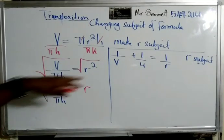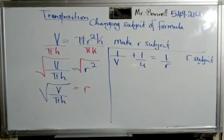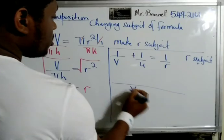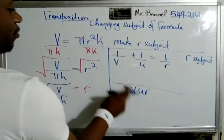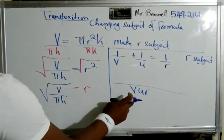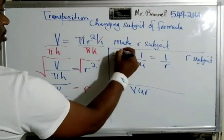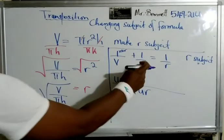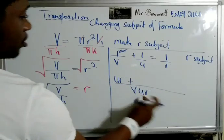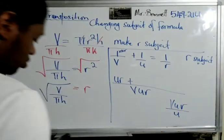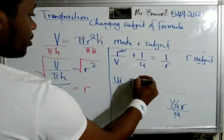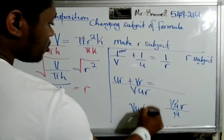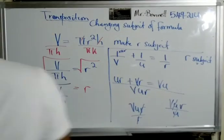To make r the subject, first we need to get rid of the denominators. We find the lowest common multiple — the LCM would be v, u, and r. We divide each term: v into vur cancels the v, leaving ur. U into vur cancels the u, leaving vr. R into vur cancels the r, leaving vu. Let me clear the board.